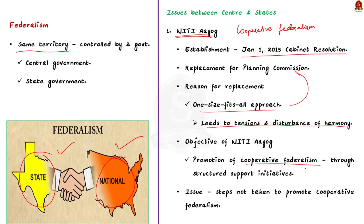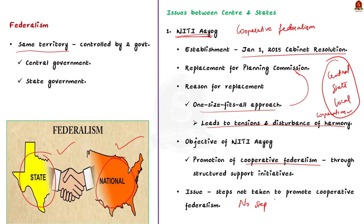Cooperative federalism is the branch of federalism which envisages that all levels of governance — central, state, and local bodies — should cooperate with one another to achieve collective goals for the benefit of society. This is done through structured support initiatives and mechanisms with the states at the center point. The issue here is that NITI Aayog has not taken any major steps to promote cooperative federalism since its constitution, which has eroded the relationship between the center and the states and undermined the spirit of federalism.